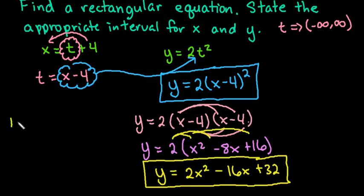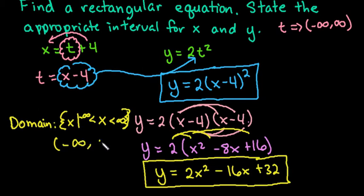So the domain or my x values is going to either be in set notation, x such that x has to be greater than negative infinity up to positive infinity. Or you can just write it in interval form, negative infinity to positive infinity, which is probably easier.